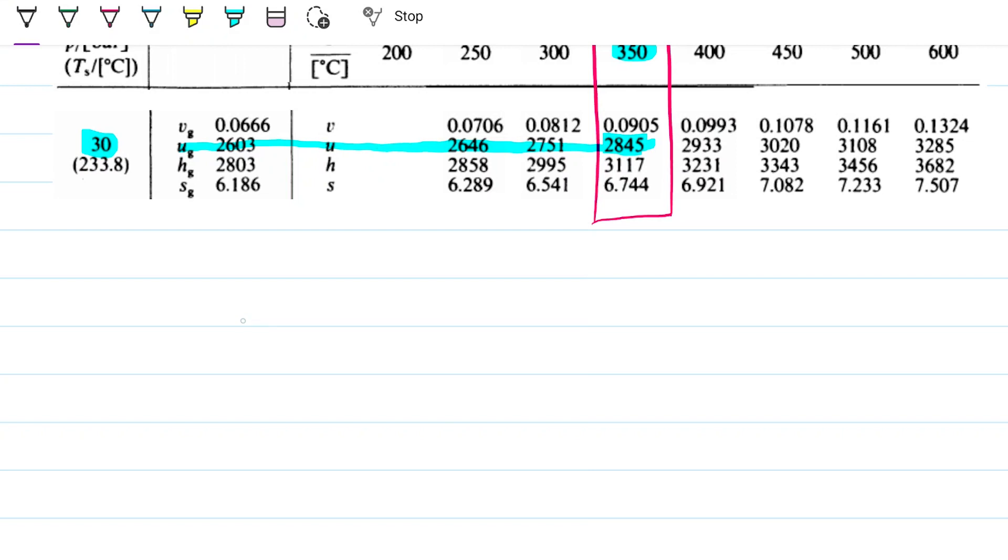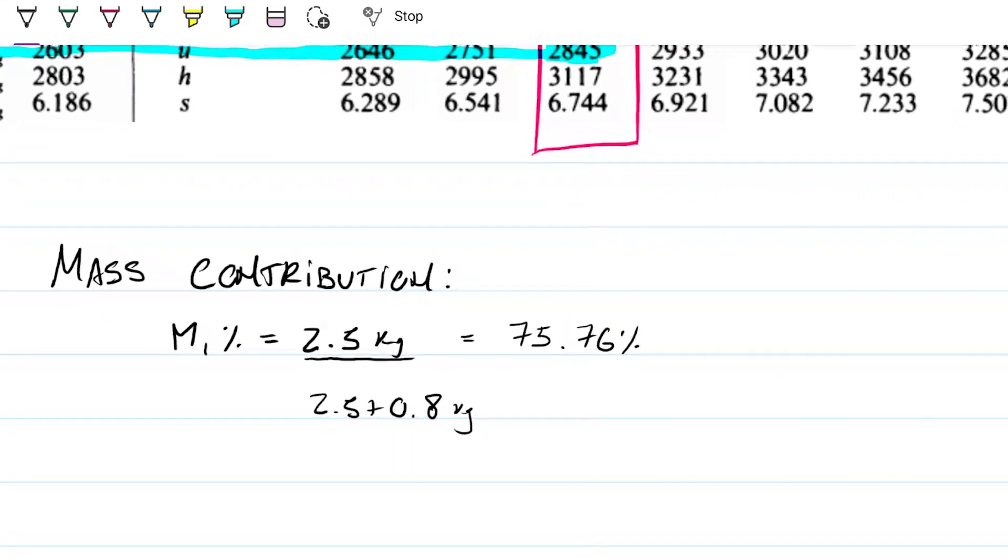On the one hand, I have mass contribution. Mass 1's contribution is 2.5 kilograms. Out of what? Well, out of the sum, right? Out of the sum of both masses. So that's specifically 2.5 plus the 0.8, which gives us 3.3 kilograms. And then this is about 75.76%. So out of the total mass, the first stream is contributing three quarters.